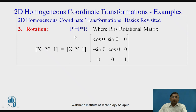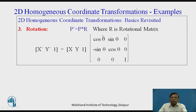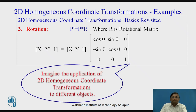In rotation, p-dash equals p into R, wherein R, the rotation matrix, is given as a 3×3 matrix for 2D transformations. The normal 2×2 part is required for rotation, whereas the third row and third column are the augmented part towards the homogeneous coordinate system.